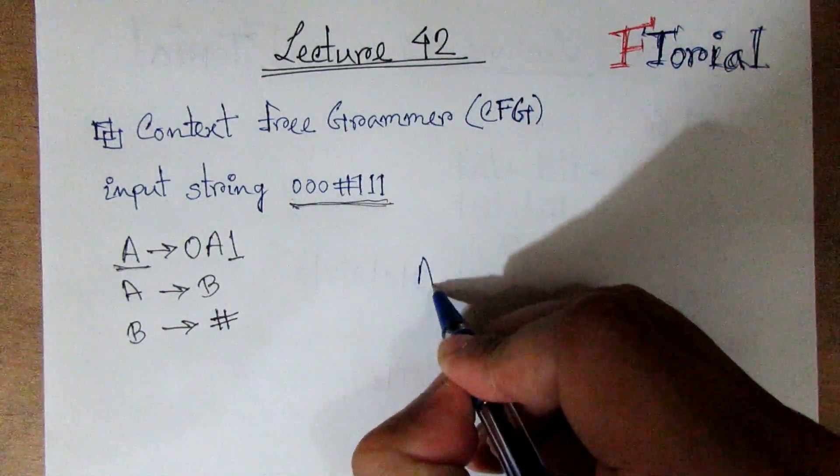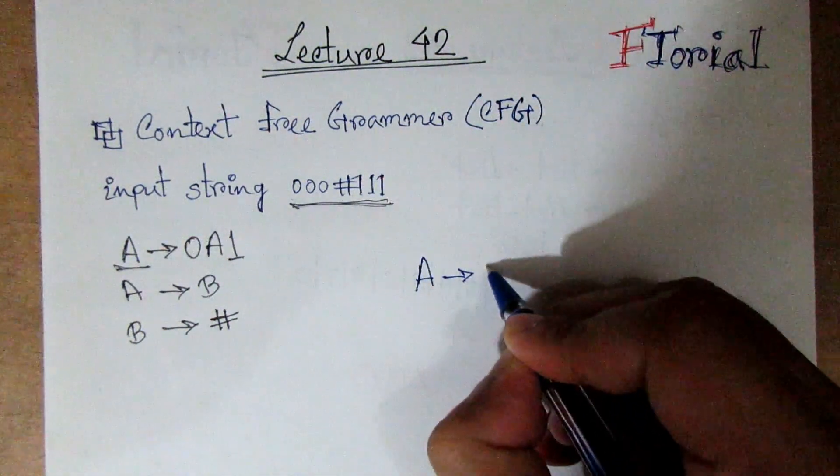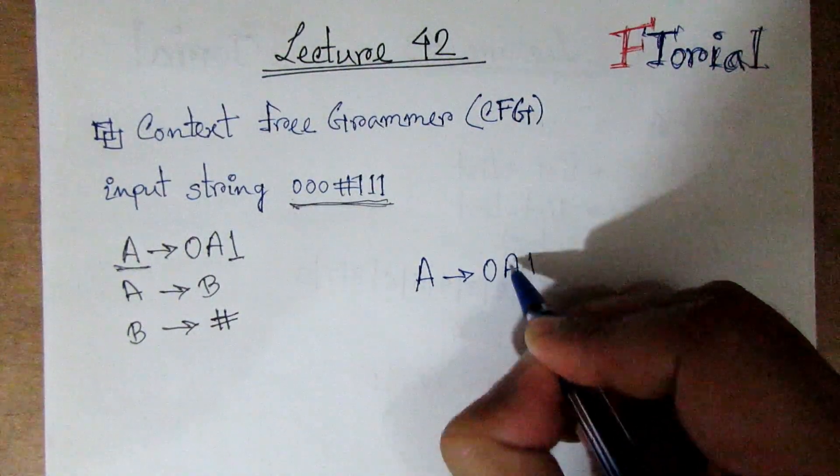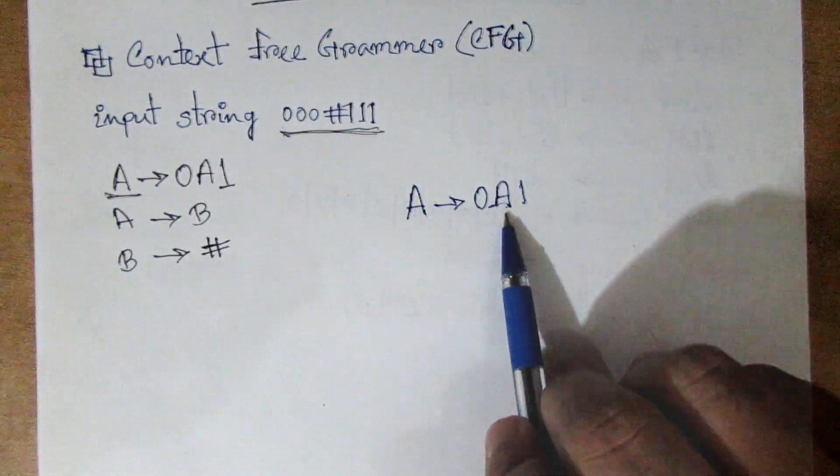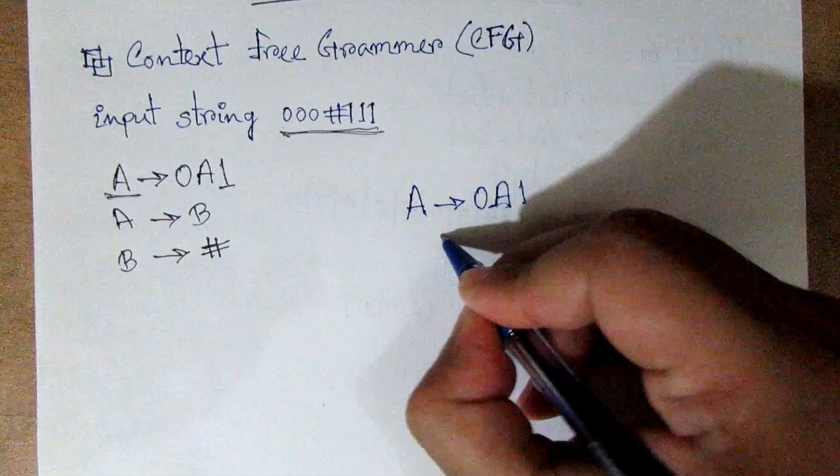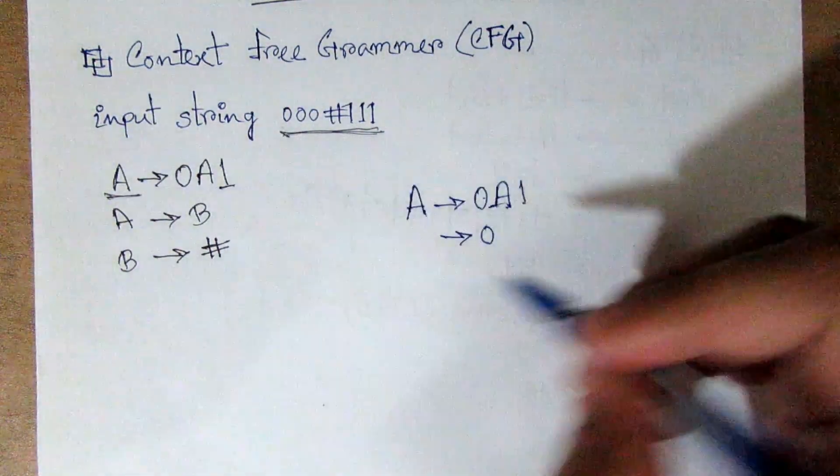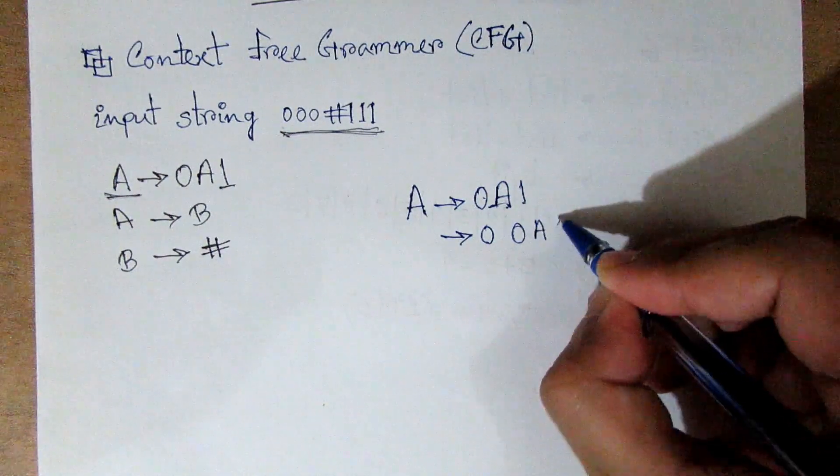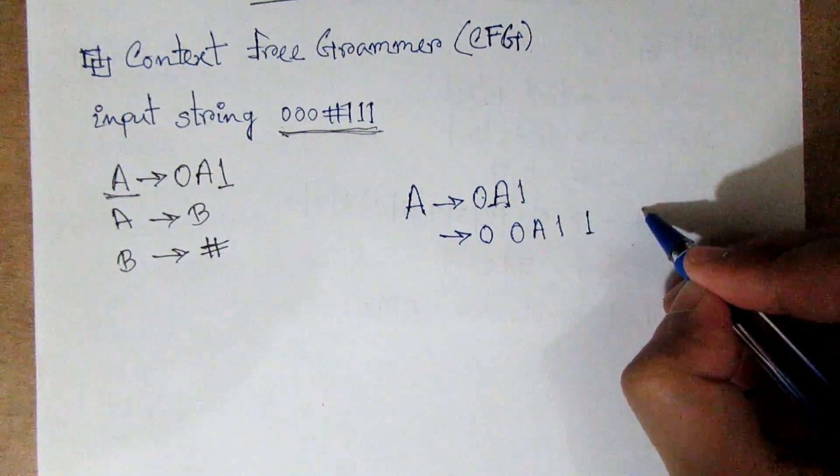So we can start with A. We can derive 0 A 1, so we get 0 A 1, then 0 0 A 1 1.